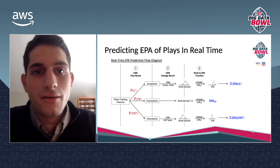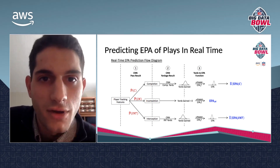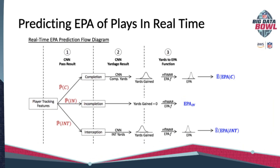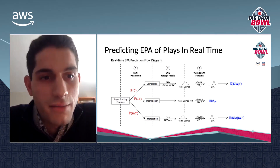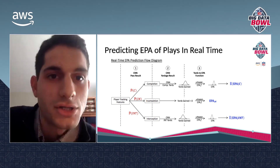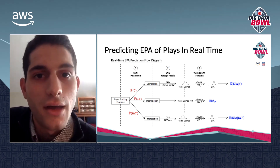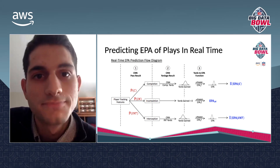In order to do that — this is really the machinery of our submission — we created and predicted EPA values throughout the course of a play in real time. Similar to last year's Big Datable where they predicted the yardage result of a running play at the time of a handoff, we for passing plays predicted both the pass result and then the yards of that result conditioned on it. This enabled us to create EPA predictions based on player tracking data such as positioning and speeds of the players in real time throughout the course of a play.